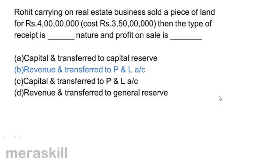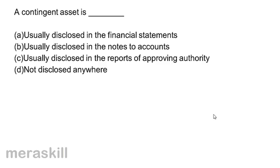A contingent asset is: A. usually disclosed in the financial statements, B. usually disclosed in the notes to accounts, C. usually disclosed in the reports of the approving authority, or D. not disclosed anywhere. A contingent asset is disclosed in the reports of the approving authority. Correct answer is C.